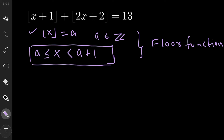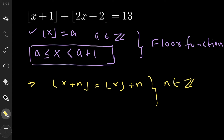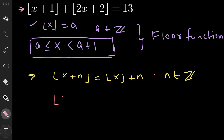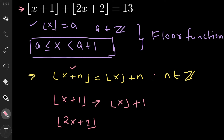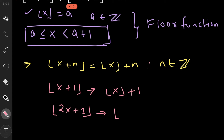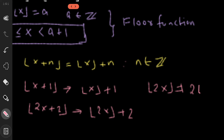There is an identity related to the floor function: floor(x + n) = floor(x) + n, but only when n is an integer. In our equation, the first term is floor(x + 1), and since 1 is an integer, this equals floor(x) + 1. Similarly, floor(2x + 2) = floor(2x) + 2. Note that floor(2x) is NOT equal to 2·floor(x).